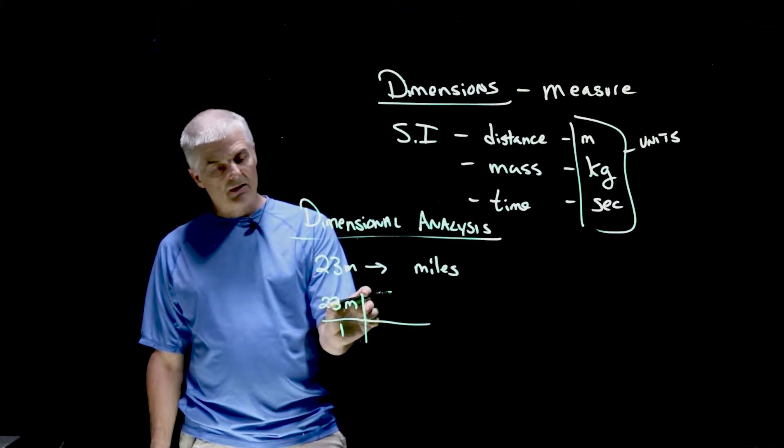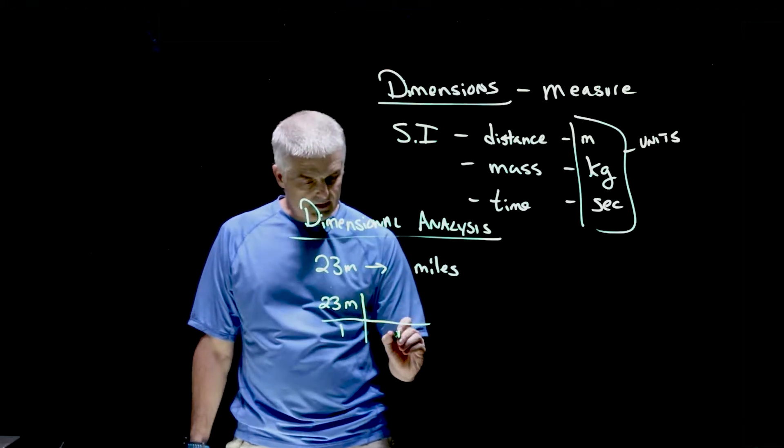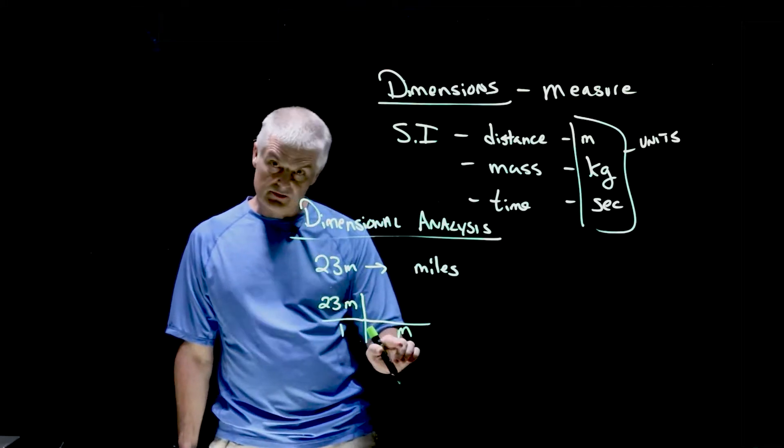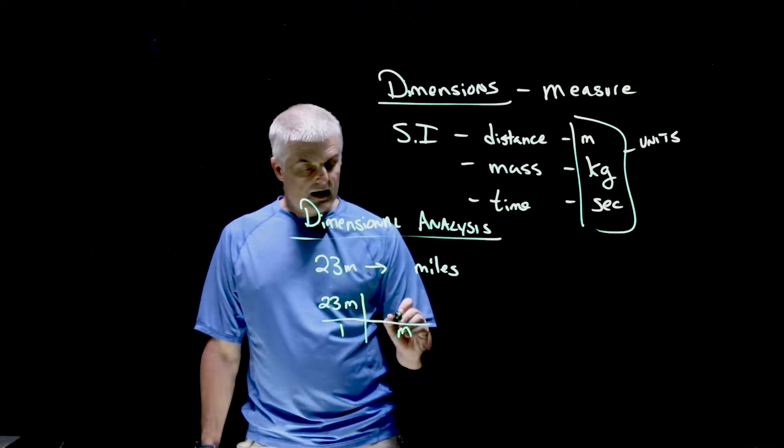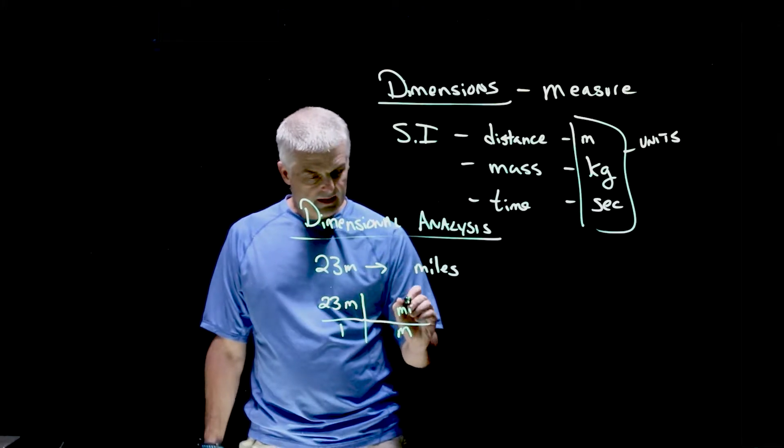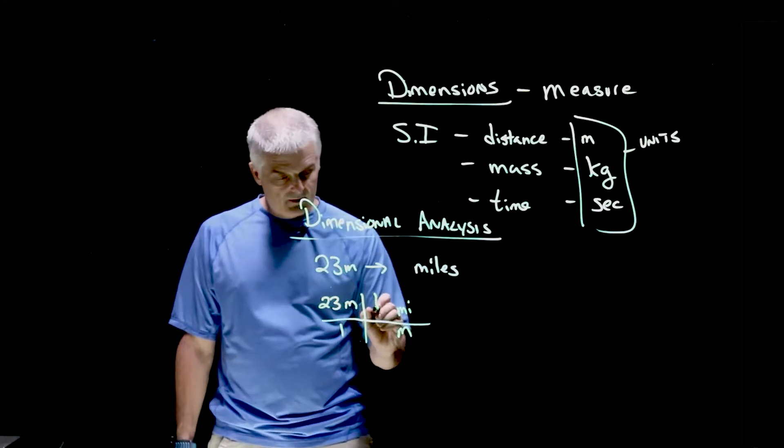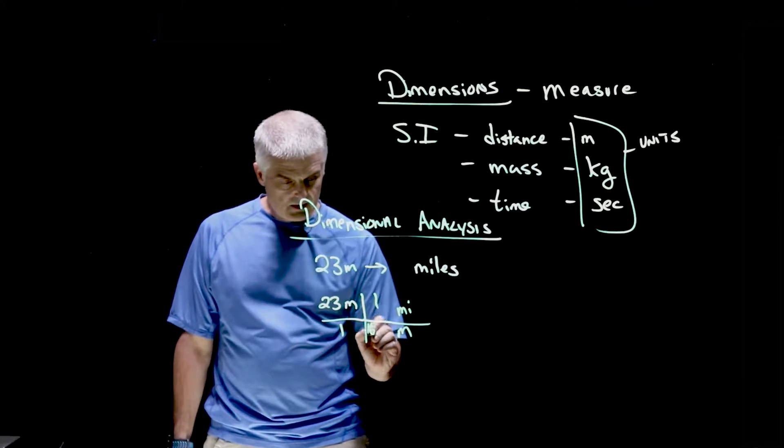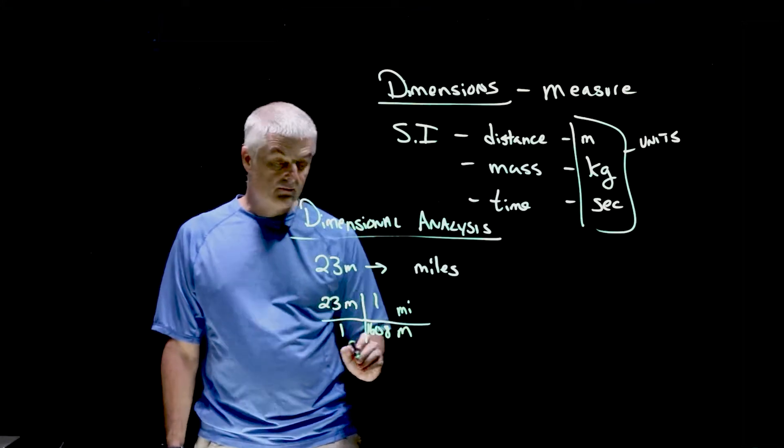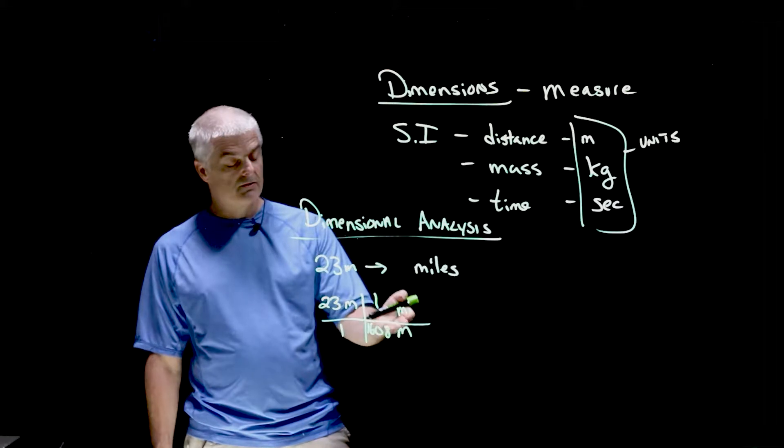And what I want to do is multiply by one. I want to find the number of meters. Now, I want to get the M's to cancel, so I want cancellation. And I want to go to miles. Now, this is where you'd look it up on a table. One mile, you may not know this, is 1,608 meters.